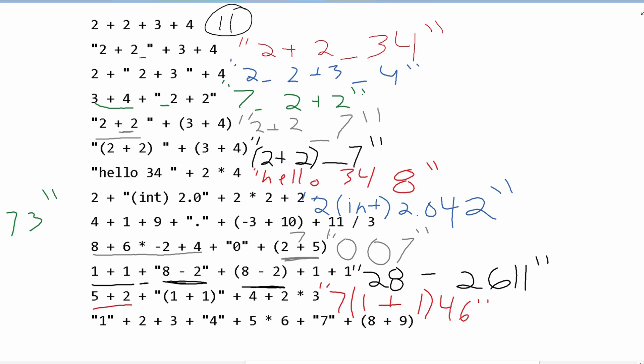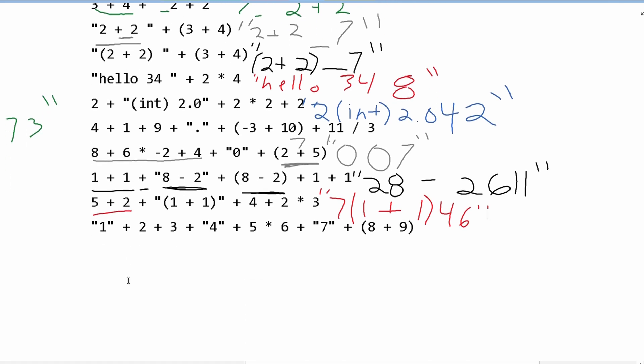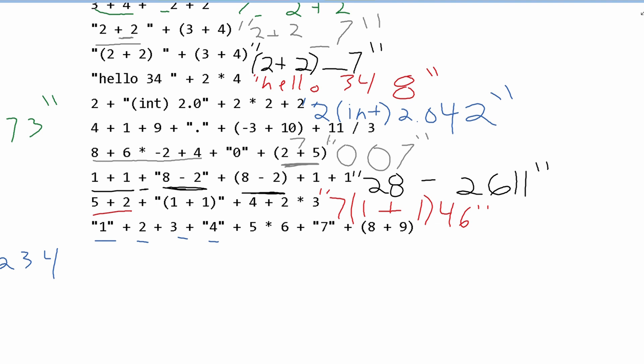Lastly, we have this string "1". So we can write 1 here. And then we have 2, 3, and then 4. So we'll have 2, 3, 4, because these plus signs are just combining these strings and not adding them together. Next, we have 5 times 6, which is 30. And then we have the string "7".